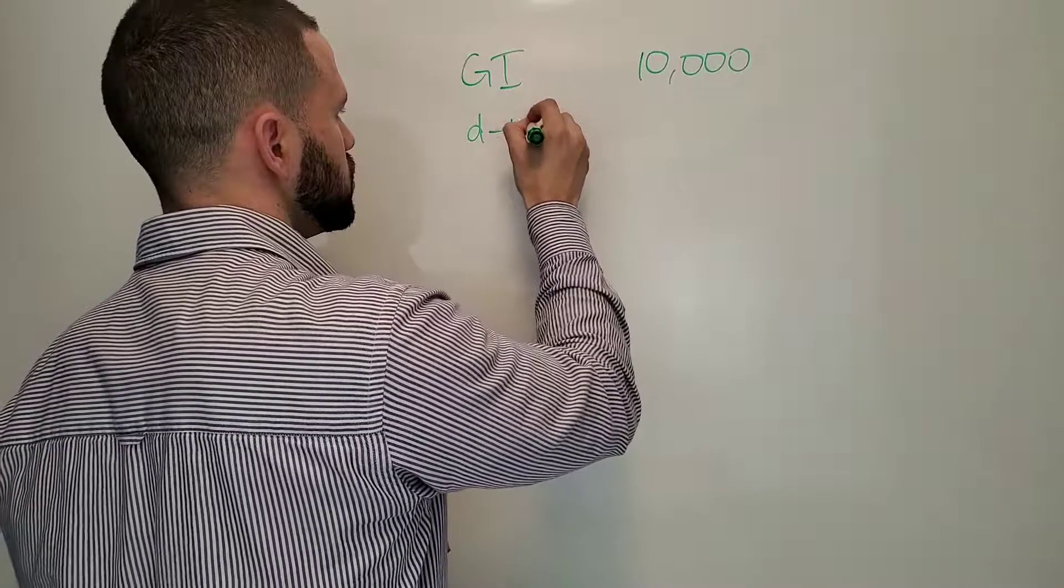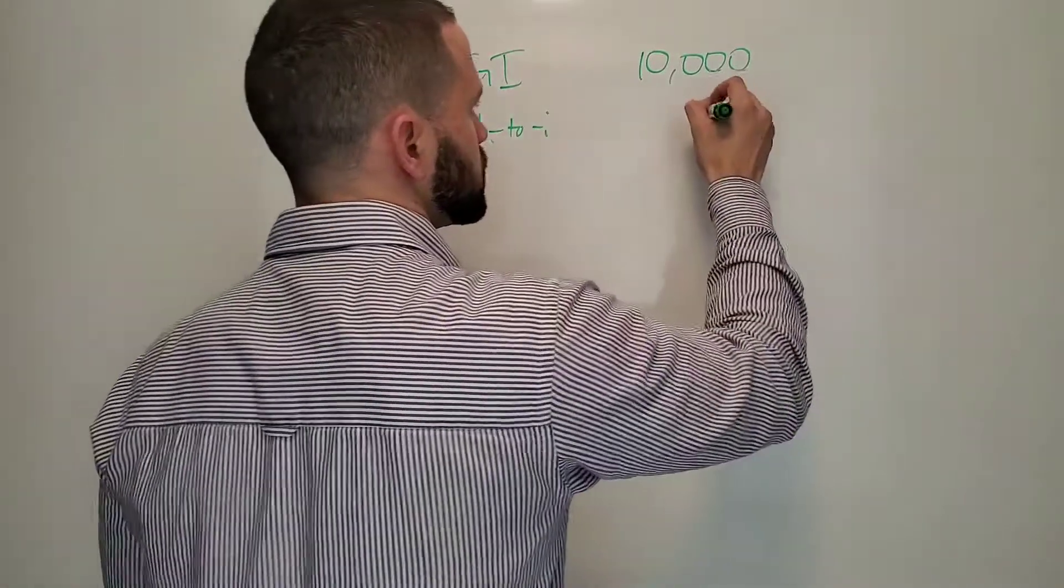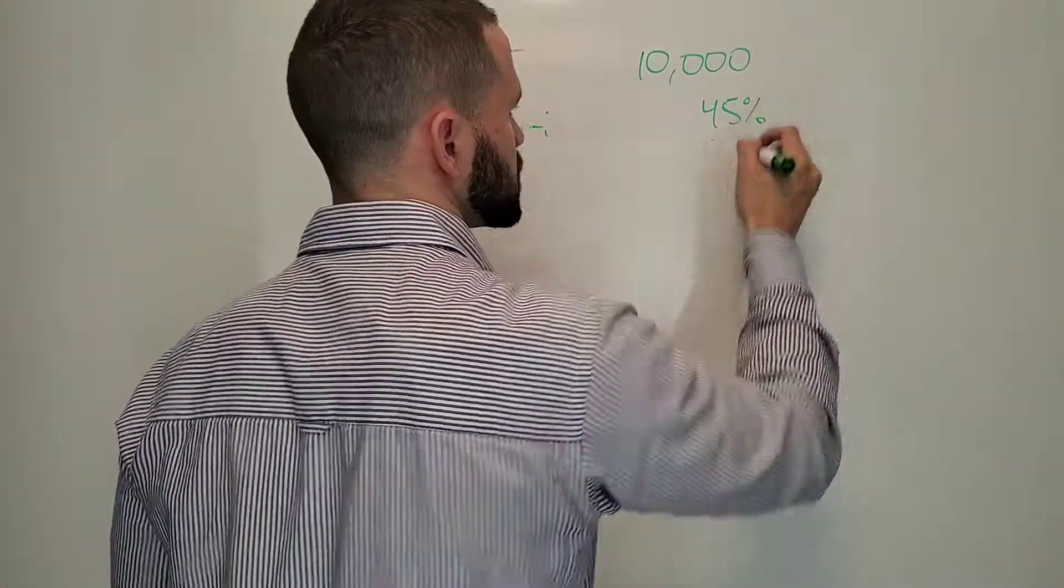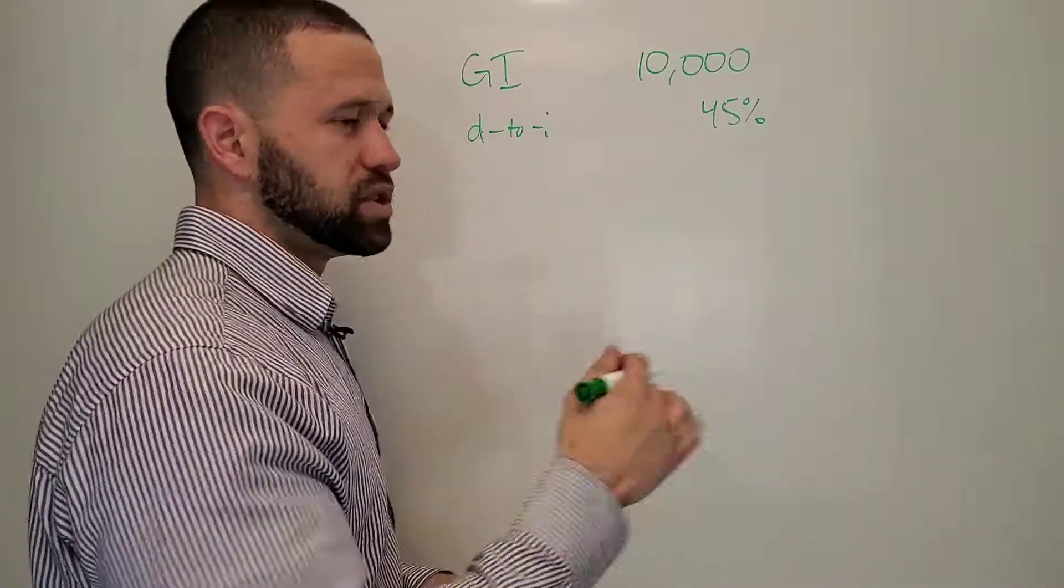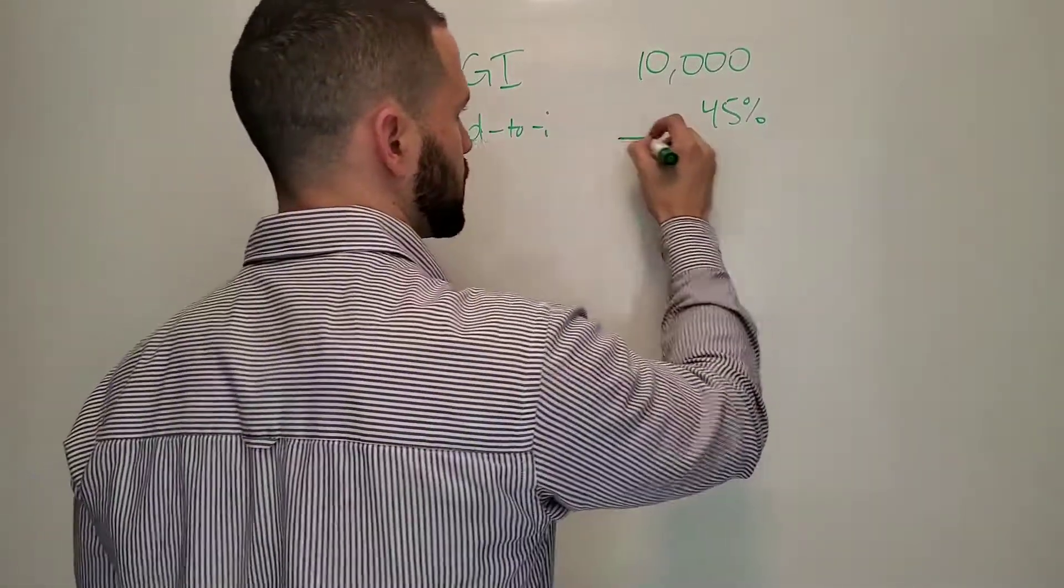Next, you're going to have debt to income ratio. We're going to use 45%. Some loan programs might let you exceed that. Most will let you get up to 45%, somewhere around there.